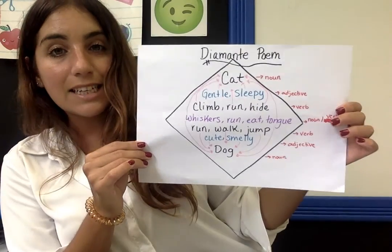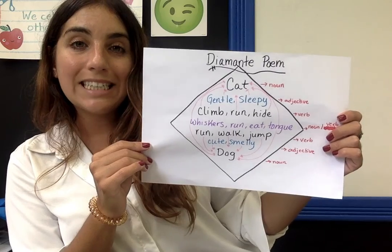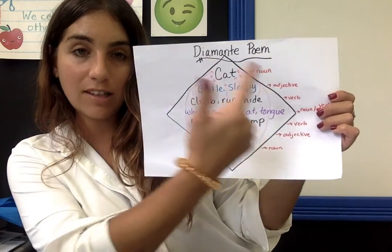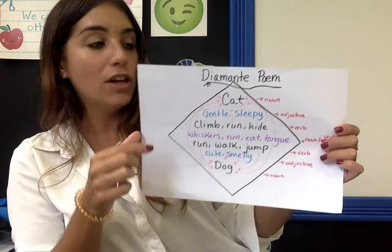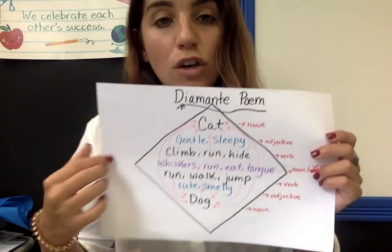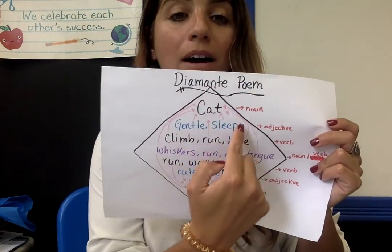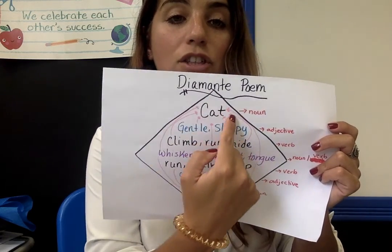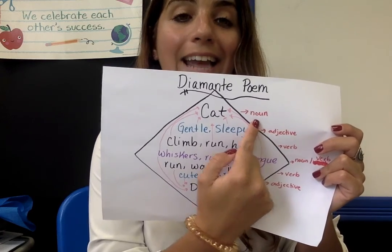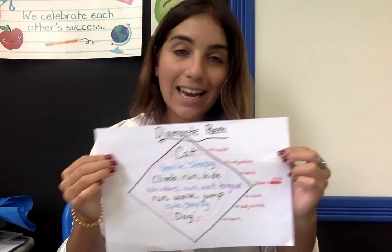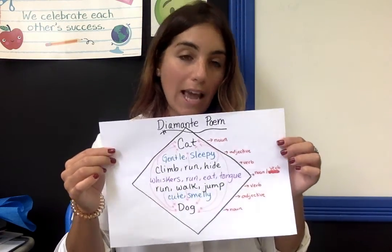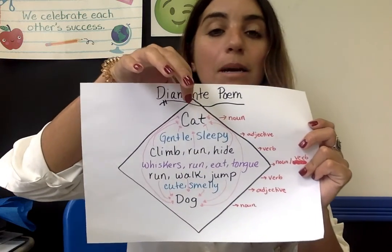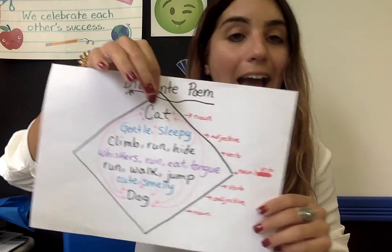This is the example that we did together last week. A gente fez esse exemplo juntos na semana passada. So let's take a look. At the top of our diamante poem — aqui em cima do nosso poema diamante — we have a noun. Remember that a noun is a person, a place, or a thing. At the top of our diamante poem, we have the word cat.